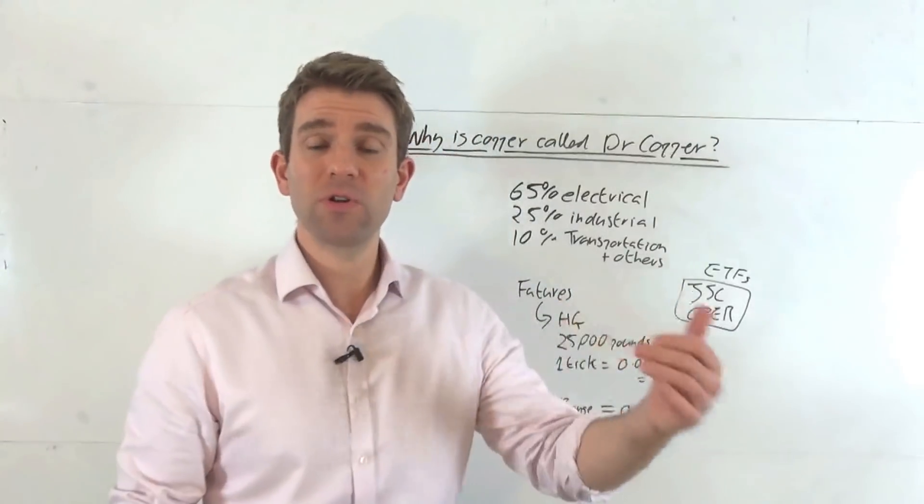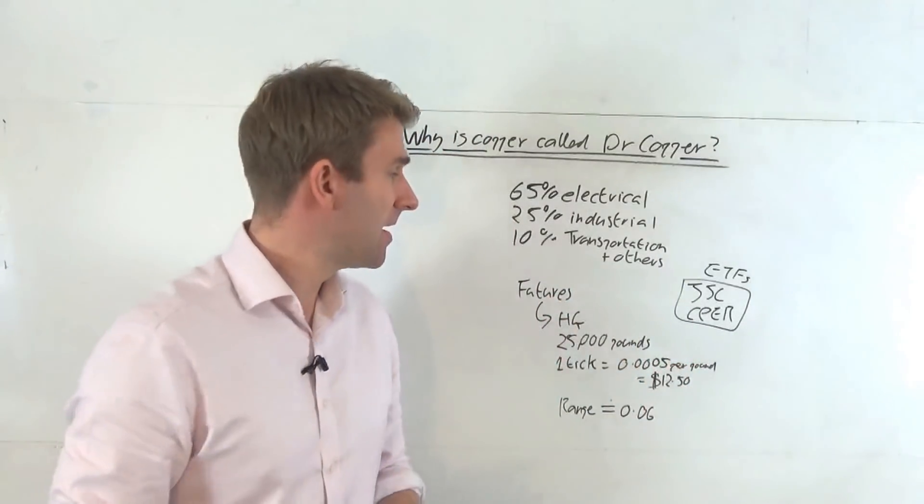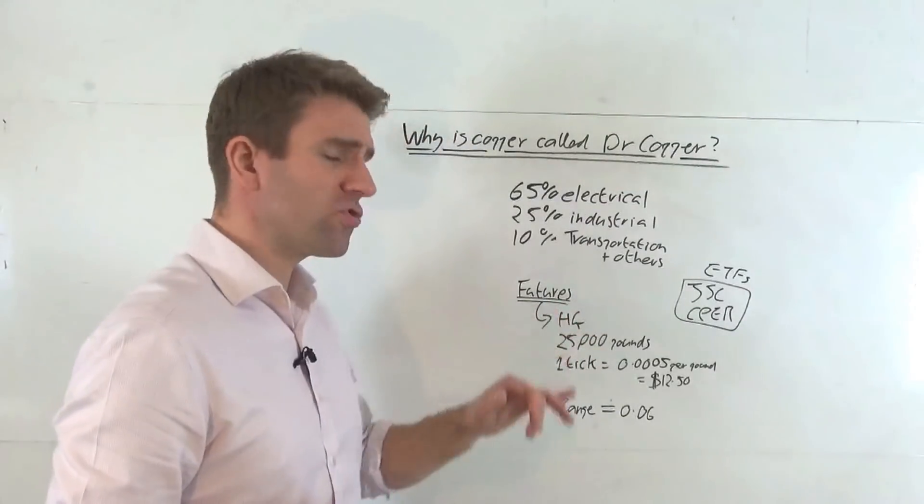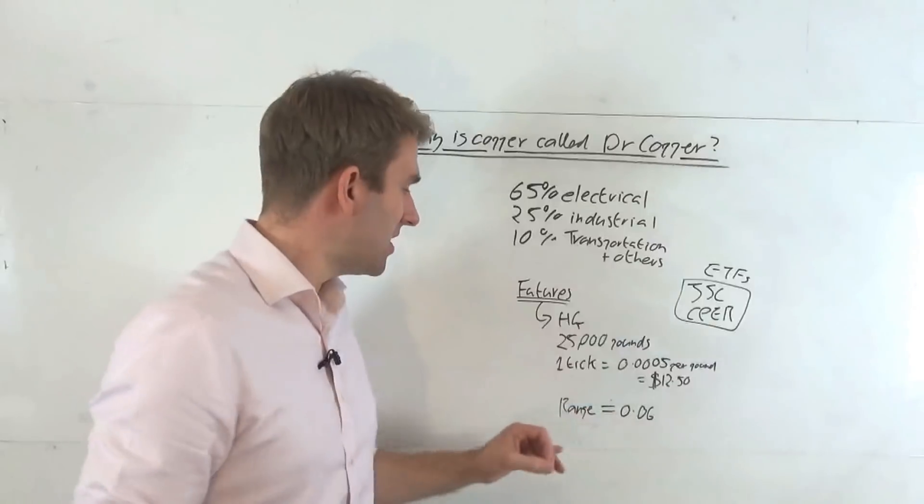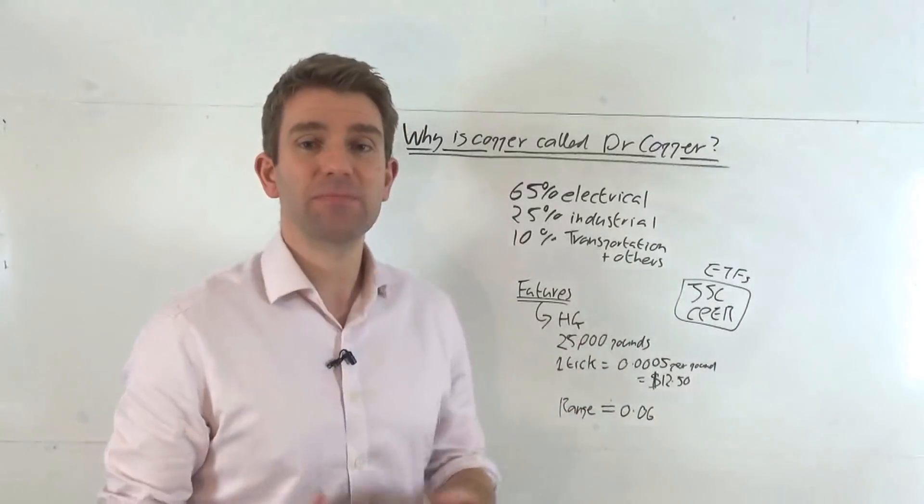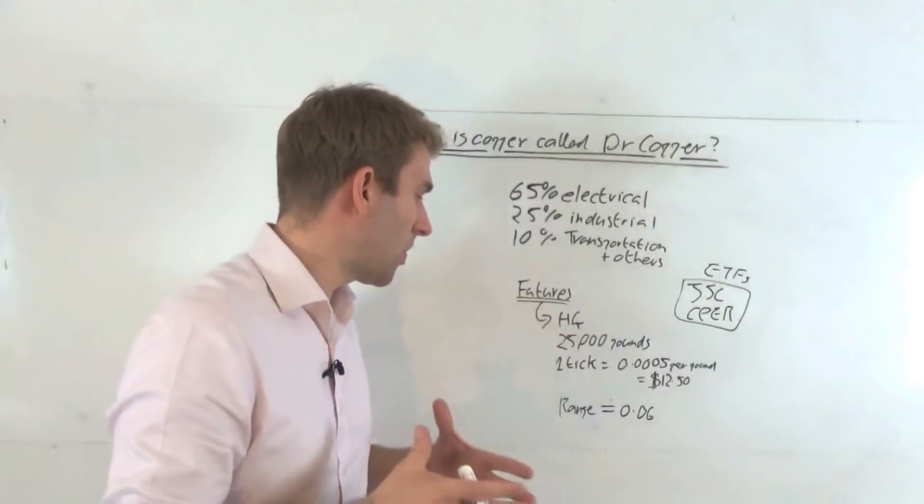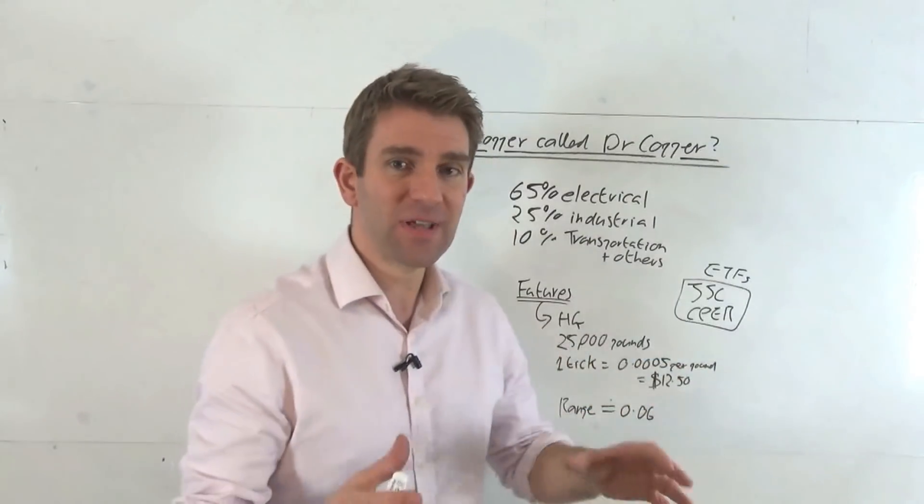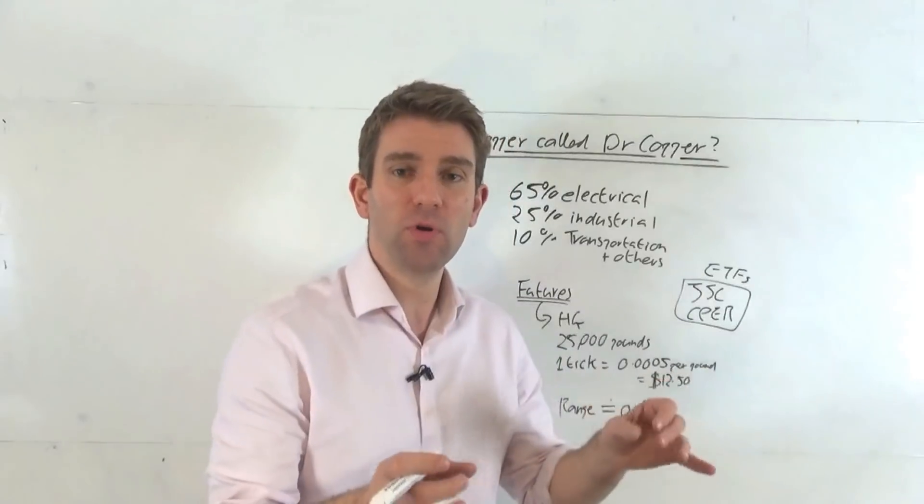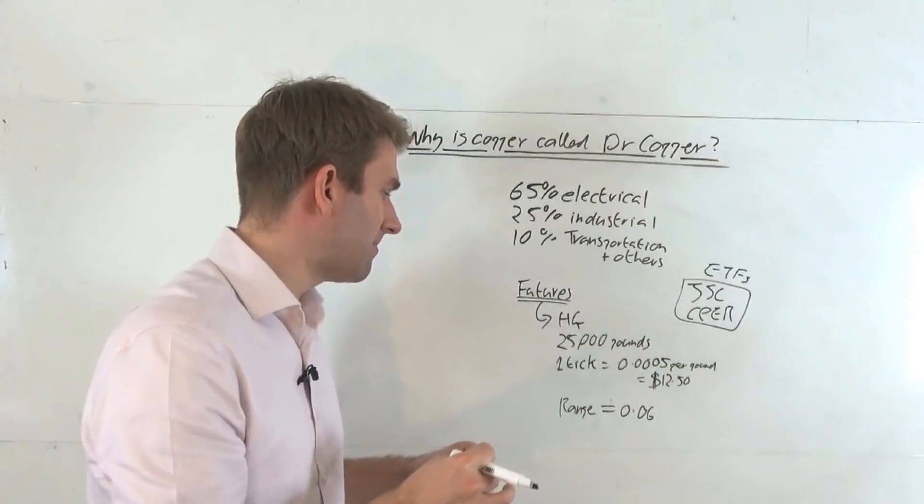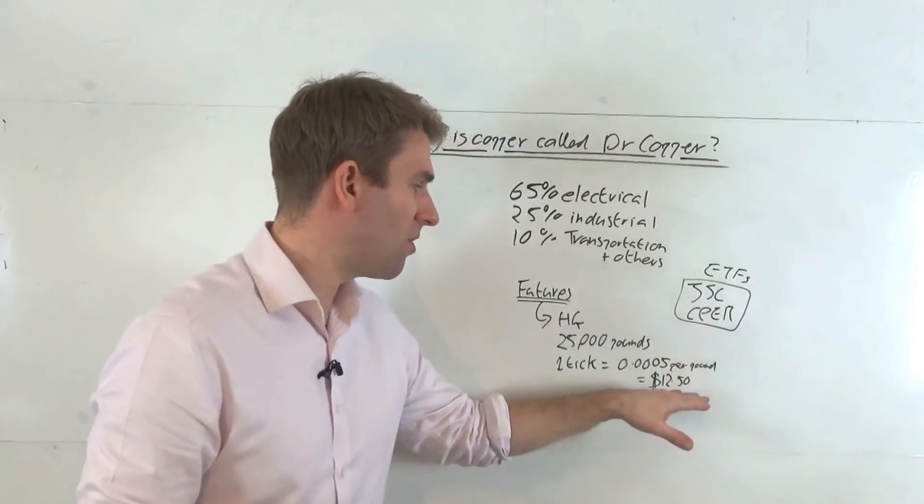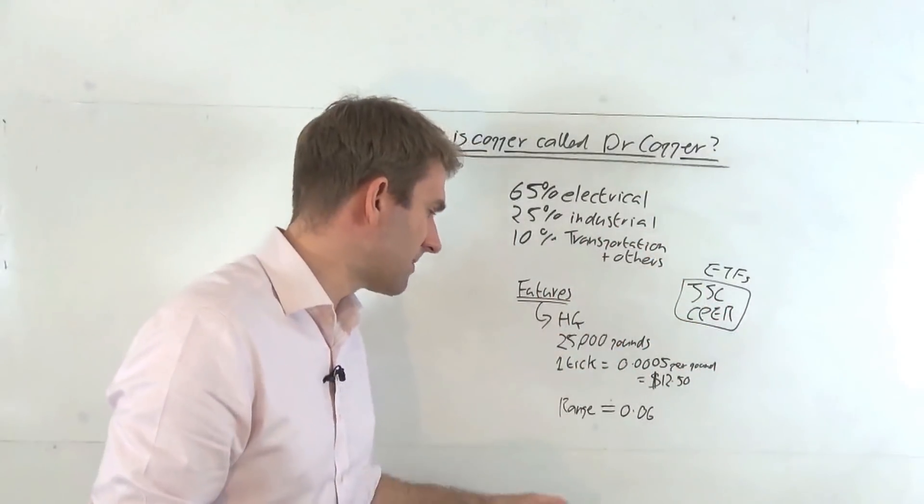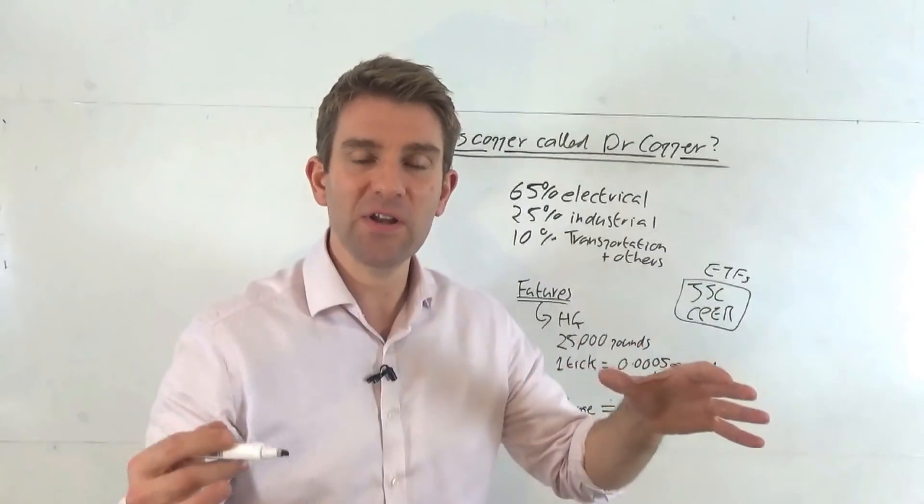Let's have a look at how we could trade it. Of course, we could trade it with a spread bet or CFD, but we can also trade it on a futures contract. A futures contract, the code for that is HG. One contract is 25,000 pounds of copper, pounds in the weight. One tick is 0.005 per pound. That's the minimum amount that copper can move when it's trading. That's worth $12.50. If you buy one contract, one tick moves $12.50.